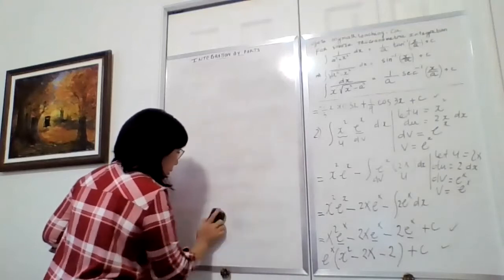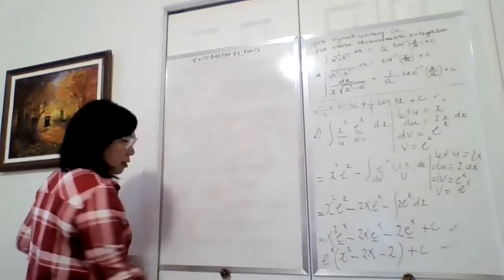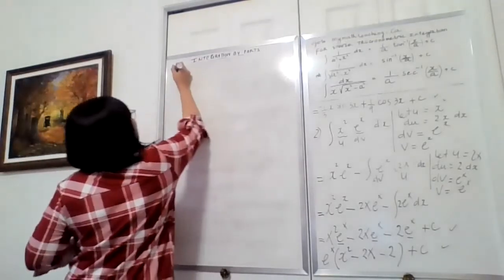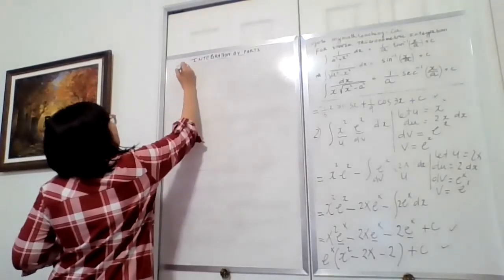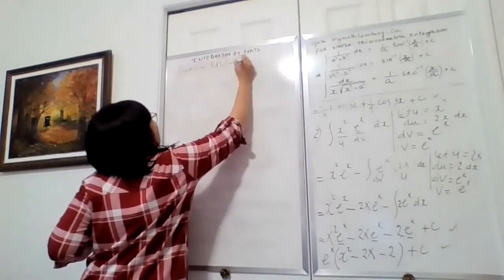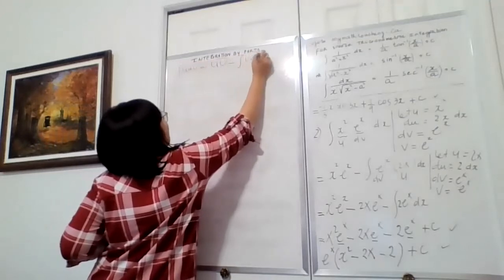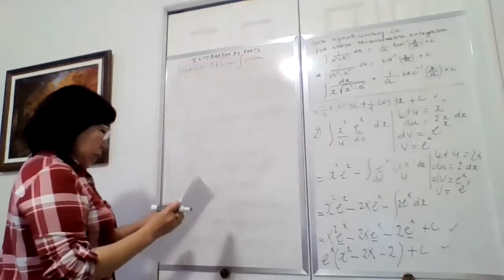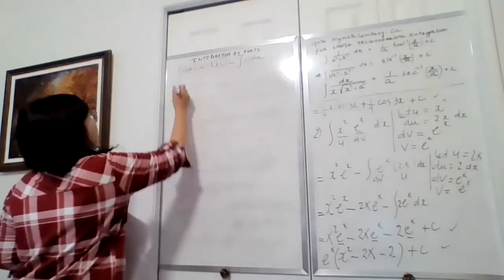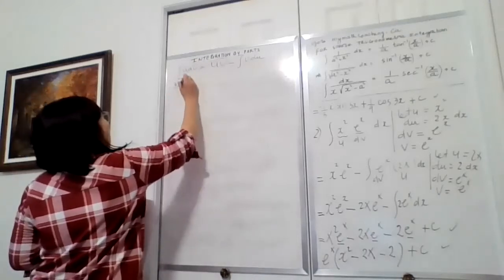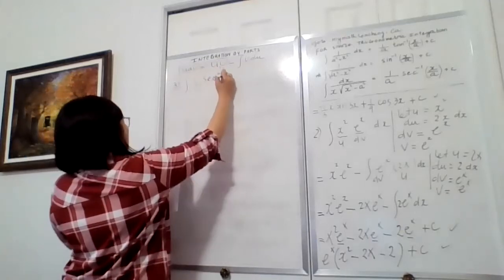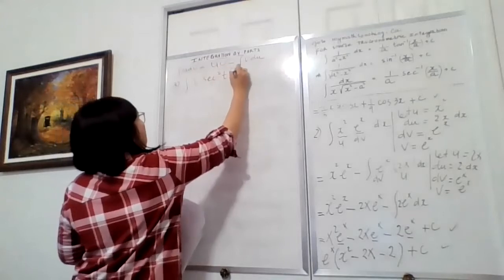Let me rewrite the formula. Our formula says: if we integrate u dv, it equals u·v minus the integral of v du. Our next example will be number 3. Let's say you have to integrate t·sec²(t) dt.